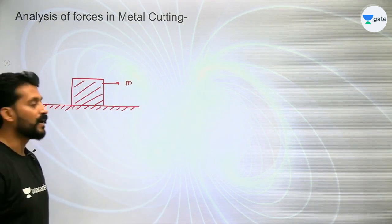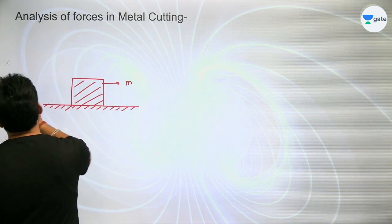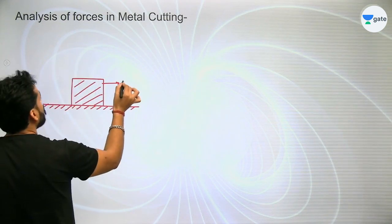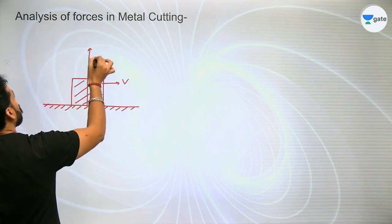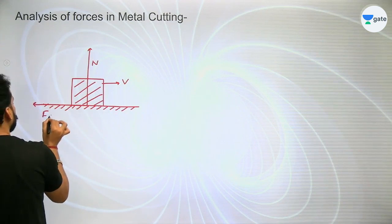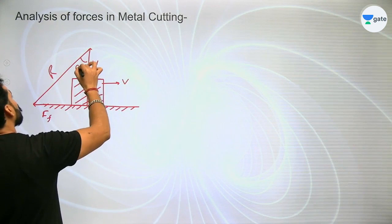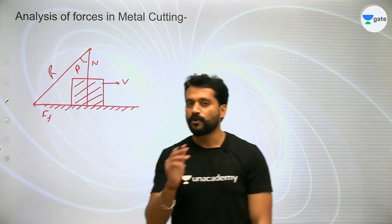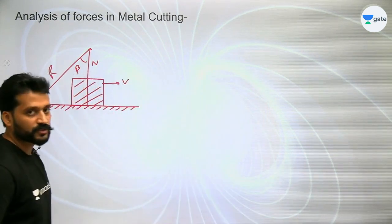Suppose this is mass M, and this is also mass M. It is moving with velocity V. So we know the normal reaction will act here, friction force FF will act here, and their resultant will be R. This angle we will call the friction angle beta. This same concept was applied at the chip and rake surface interface, and from there we derived the friction force.